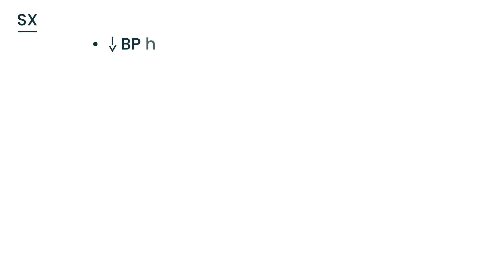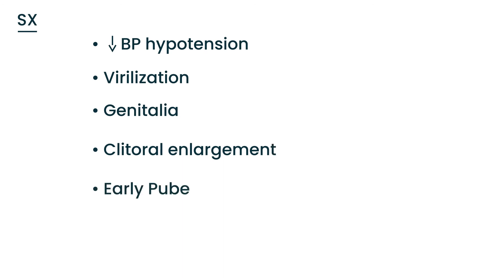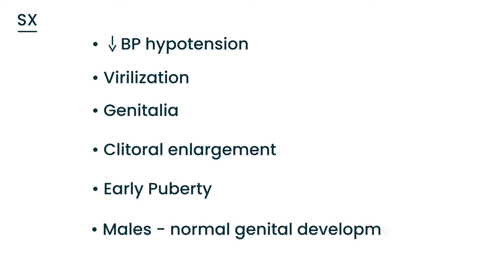Regarding symptoms of CAH: blood pressure will be low on physical exam, and most visibly in female patients — because virilization only happens in females — you will see telltale signs. For example, the genitalia of females will show clitoral enlargement, and early puberty can also occur. In males, genital development is normal.